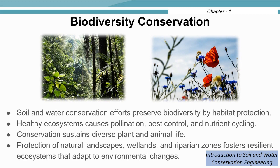Soil and water conservation efforts can also help preserve biodiversity by protecting habitats. Healthy ecosystems support pollination, pest control, and cycling of nutrients, sustaining diverse plant and animal life. We can protect natural landscapes, wetlands, and riparian zones, which provide resilient ecosystems that adapt to environmental changes.